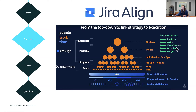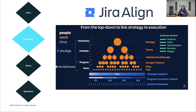Jira Align also has several business vectors that can plug into each of these layers of scale — the idea of product management, OKRs, budget, etc. When we get into the tool, you're going to see a lot of these terms come up again, and we will see that it really does help us connect our work up and down these hierarchies all throughout the enterprise.